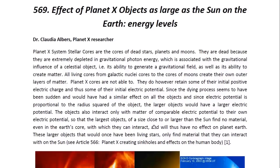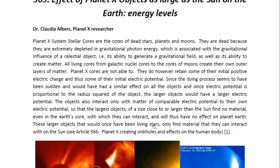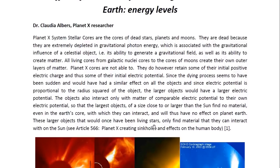Planet X systems consist of dead stars, planets and moons. They are dead because they are extremely depleted in gravitational photon energy, which is associated with the gravitational influence of a celestial object — its ability to generate a gravitational field, as well as its ability to create matter. All living cores, from galactic nuclei cores to the cores of moons, create their own outer layers of matter.